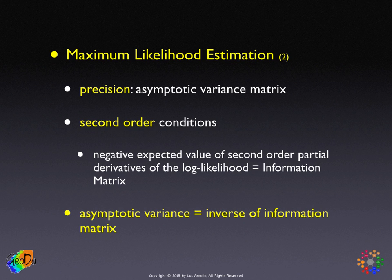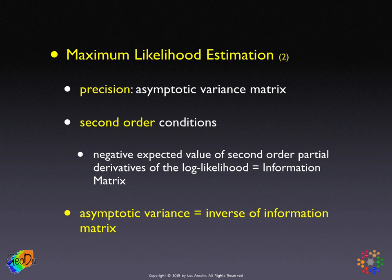The information matrix is the negative of the expected value of the second-order partial derivatives of the log likelihood — you can think of it as the rate of change of the log likelihood — and it gives us a measure of precision. The asymptotic variance is then the inverse of the information matrix: the information matrix tells us about precision, and its inverse tells us about variance.